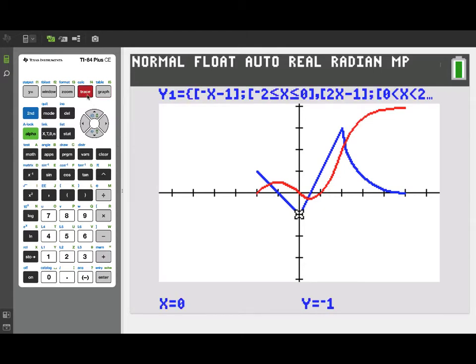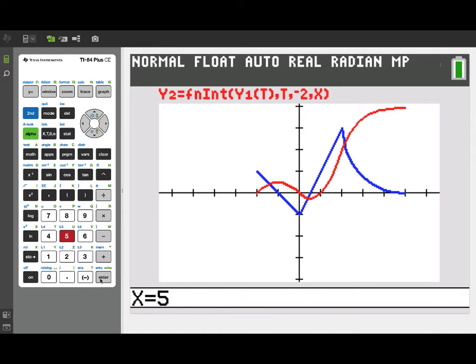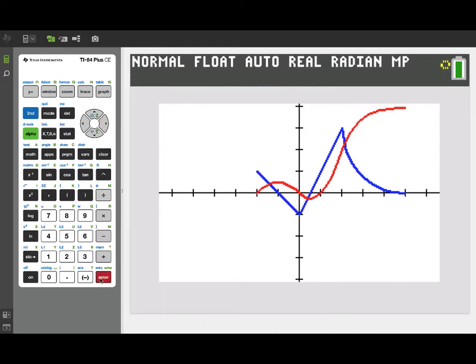Now one of the questions that was asked in the problem was what's the maximum value of this anti-derivative over the interval from negative 2 to 5? Well we can see that looks like it's appearing at the right end point. I could try to trace over to that, or we'll just go ahead and enter 5 and jump over, let it calculate that right end point value for our anti-derivative. And there we see it at x equals 5, we've got a y value of 3.9314187. And that's the maximum value of our anti-derivative over the entire interval.